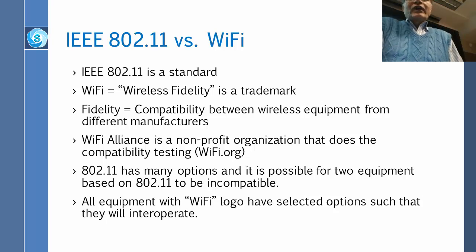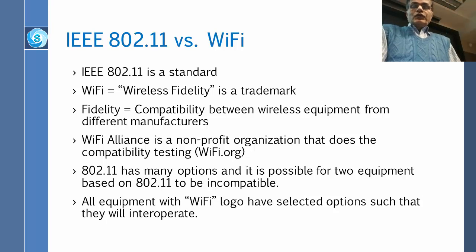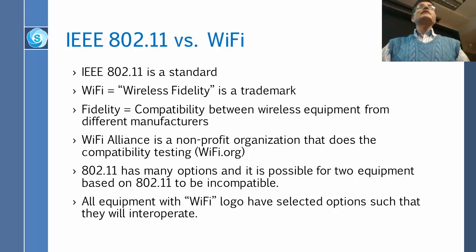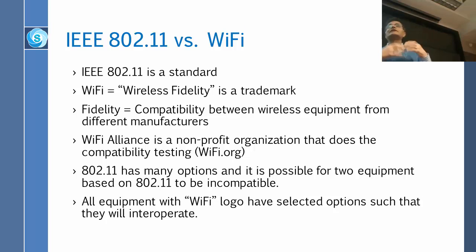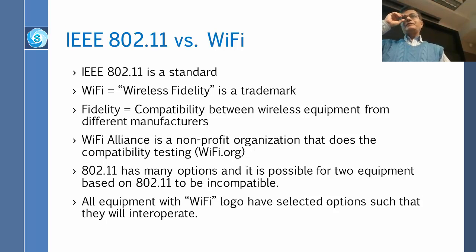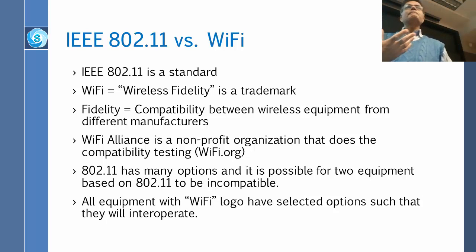Wi-Fi is actually a trademark of the Wi-Fi Alliance, which has nothing to do with the IEEE — it is a different organization. IEEE makes 802.11. Wi-Fi Alliance is a group of companies that got together and said this standard is very difficult to implement because it has hundreds of options. If you implement option 135 and I implement option 678, we can't talk to each other.